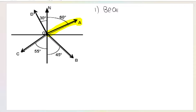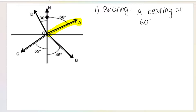How would you give the direction of A using the bearing method? Remember, bearing is just an angle measured clockwise from the north, so it would be: A acts at a bearing of 60 degrees. Why 60 degrees? Because from the north, measured clockwise, that's 60 degrees. Easy stuff.